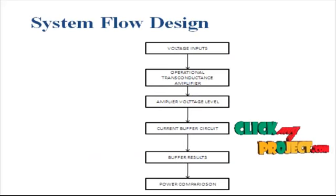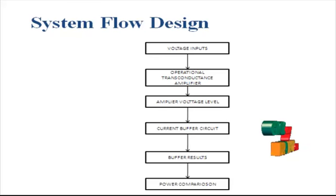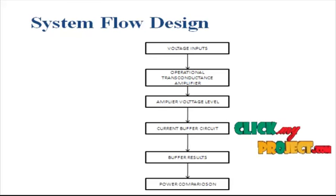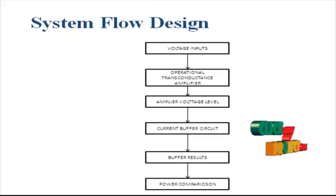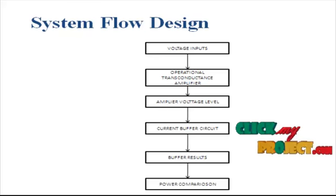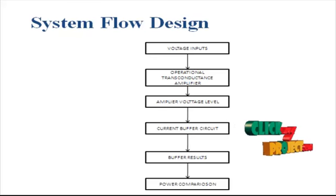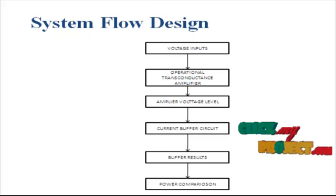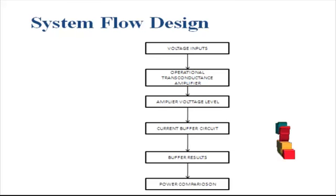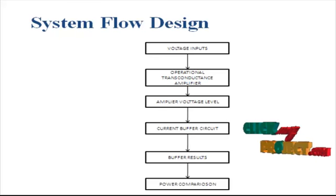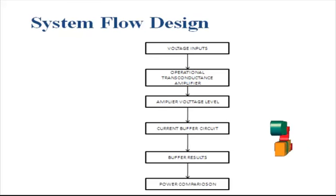Next we see the flow diagram for the product. First, the voltage input is applied to the operational transconductance amplifier. This amplifies the voltage input and conducts the operational transconducting performance. Then the amplified voltage is passed to the current buffer circuit, which buffers the input and passes the output results for the overall architecture.